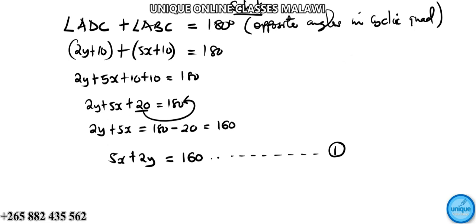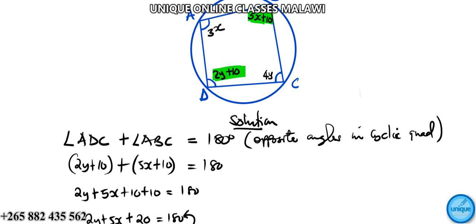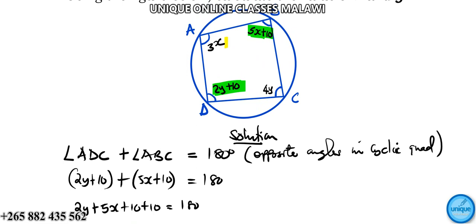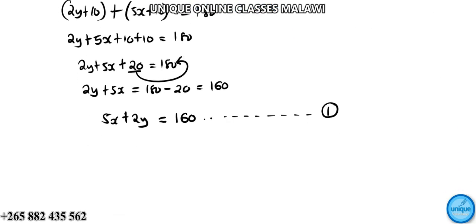For the other opposite angles, angle BAD plus angle BCD equals 180 degrees. This is also from the opposite angles in a cyclic quadrilateral theorem.